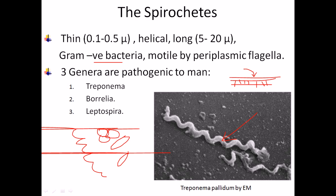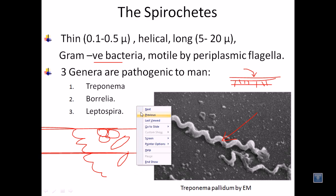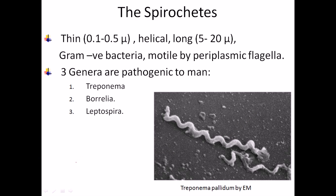The flagella of spirochetes have a different structure compared to normal bacteria. In normal bacteria, the flagella originates from the inner cell membrane, passes through the peptidoglycan layer and the outer membrane, and is released to the outside, facing the environment. So if this is a bacterial cell, the flagella comes out and faces the external environment.